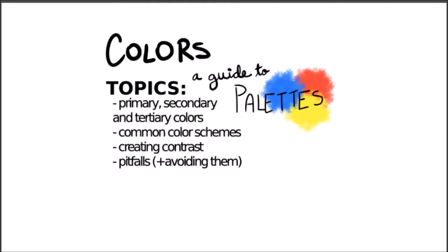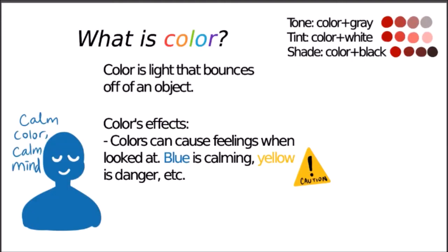All that being said, let's get started. Color, scientifically speaking, is radiation that bounces off an object and is interpreted by the eye. Color is scientifically proven to cause certain feelings — blue is calming and yellow alerts to danger.